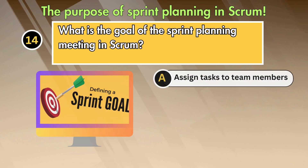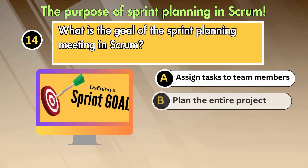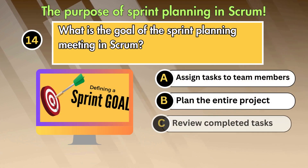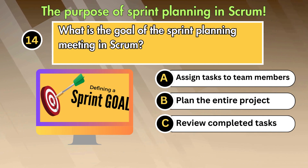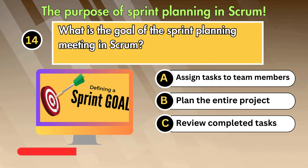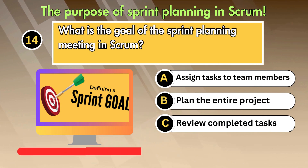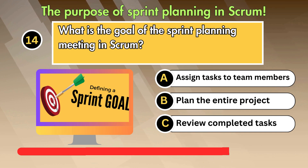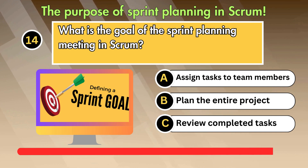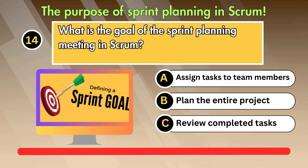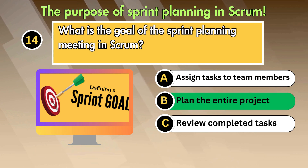What is the goal of the sprint planning meeting in Scrum? Option 1: Assign tasks to team members. Option 2: Plan the entire project. Option 3: Review completed tasks. Answer is Plan the entire project.